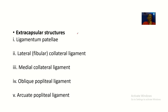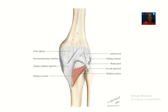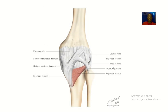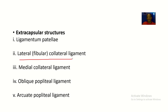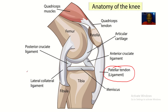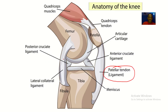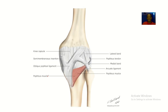First, we have the extra-capsular structures. We have the ligamentum patellae, also known as the patellar tendon, located at the front. Next we have the lateral collateral ligament — looking at the leg, the lateral side is where the fibula bone is, so it's also called the fibular collateral ligament. Then we have the medial collateral ligament.